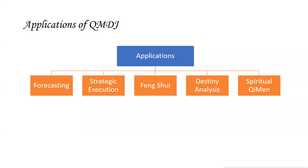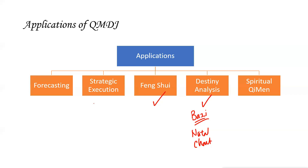As we look into Chimun, what can the studies of Chimun do for you? It can be used for destiny analysis — similar to what we have covered with Pachi, understanding your natal chart. We can also use Feng Shui, since Feng Shui has the flying stars plate. We can also look into strategic execution — planning, direction, location — and basically forecasting. Forecast is another name for divination.